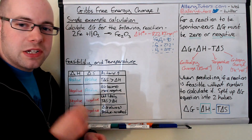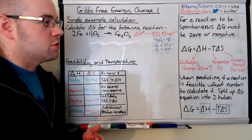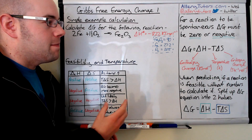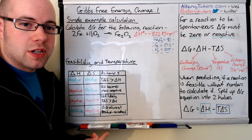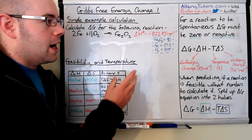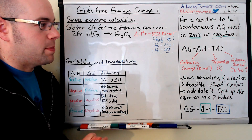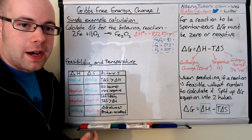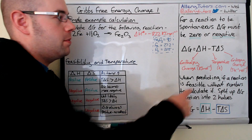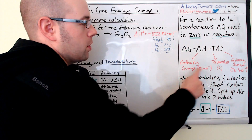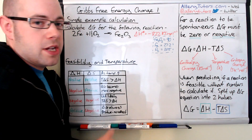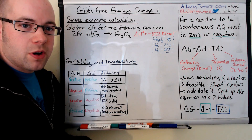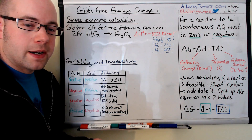Delta H is the enthalpy change in kilojoules per mole. Temperature is measured in Kelvin. And the entropy change, delta S, is measured in joules per Kelvin per mole. You have to watch out for these units and make sure you're converting them correctly.